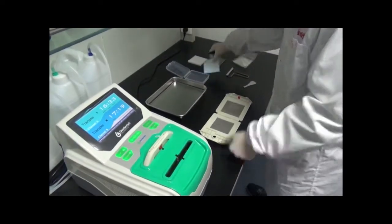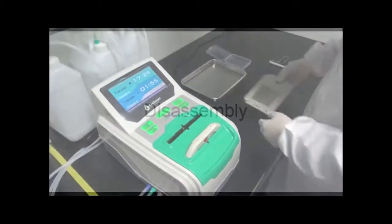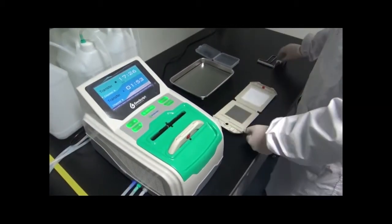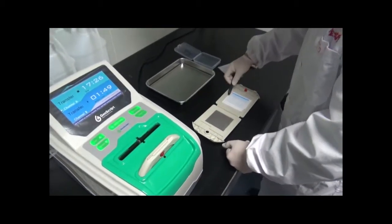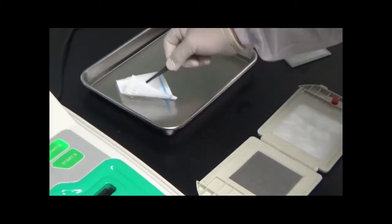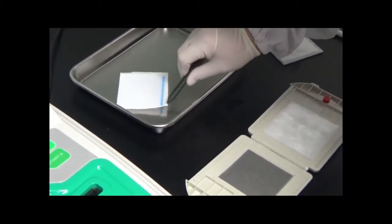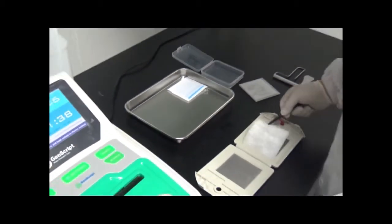After the transfer is complete, push the corresponding button to stop the run and remove the cassette. Lay the cassette flat on the bench top and remove the sponge and gel and discard both. Pick up the membrane with forceps and wash it in a DI water tray.